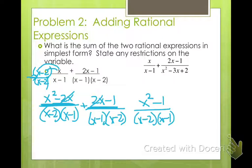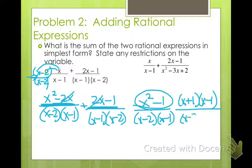Wait, there's more. What do you notice about x²-1? That can factor into (x+1)(x-1). Ooh, tricky, tricky. So that's (x-2)(x-1). The (x-1)'s cancel. So really, the sum of these two rational expressions, when added together, are (x+1)/(x-2).